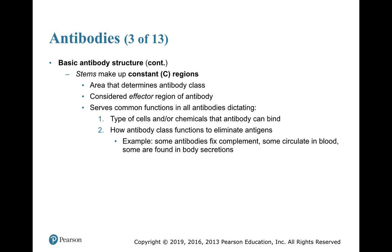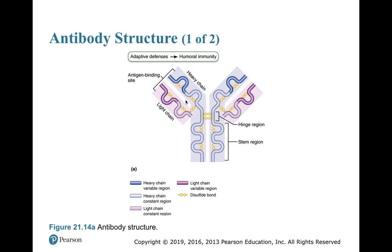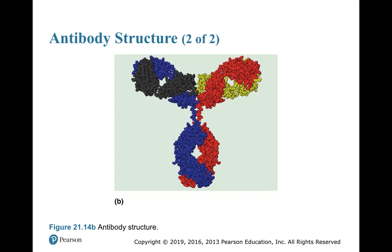Common functions in all antibodies include the types of cells and chemicals that they can bind to, and how the antibody class functions to eliminate antigens. Some antibodies fix complement; some circulate in blood; some are found in other body secretions. Here is our monomeric antibody — one antibody made up of four chains, two heavy and two light. This is the stem region, which is a constant region that determines what type of antibody you have. These are the variable regions, and when these two variable regions come together, they have the ability to bind to something — if we are producing soluble antibody to it, we have already seen whatever that something is. Here's a three-dimensional filling structure of the same idea, showing the antigen binding sites, constant region, and hinge region.